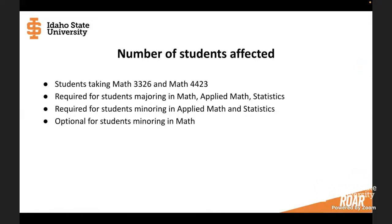Both courses are required for students majoring. 3326 is required for students majoring in math, applied math, and statistics. And 3326 is optional for students minoring in math, but right now it's still required for students minoring in applied math and statistics. According to my experience, I have taught 3326 and 4423 in about two years. More than half of students in the class of 3326, they are minoring in applied math or statistics. So they could be a student majoring in physics or computer science, or maybe electrical engineering, but still minoring in statistics or applied math.